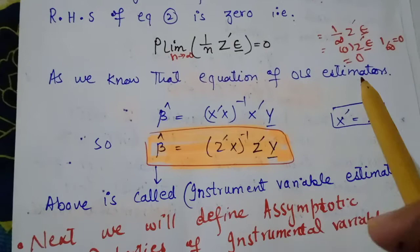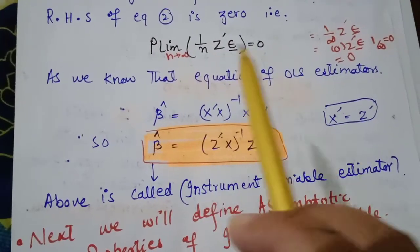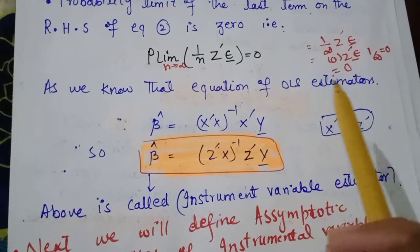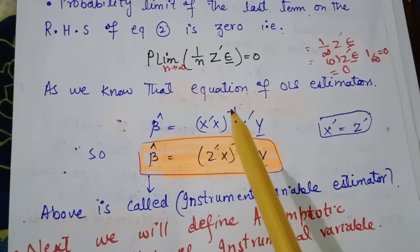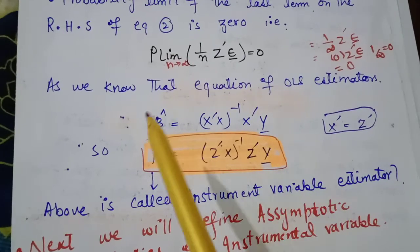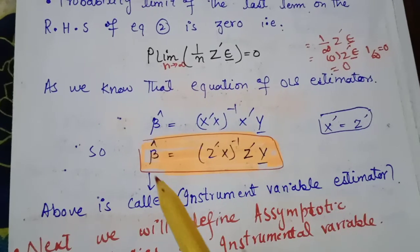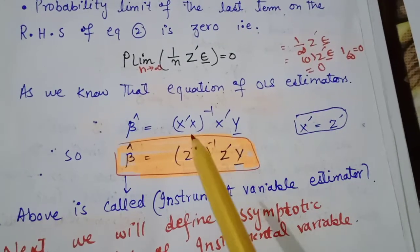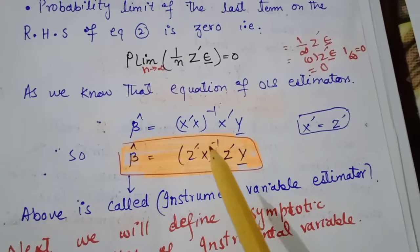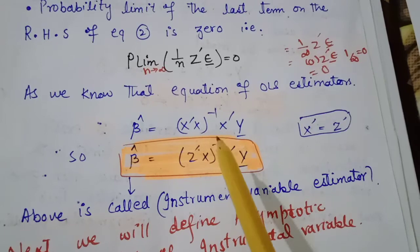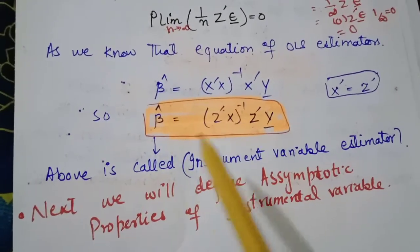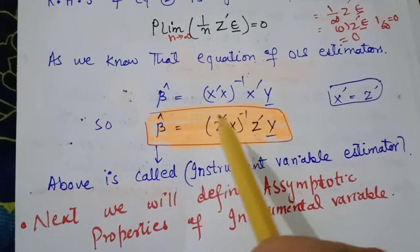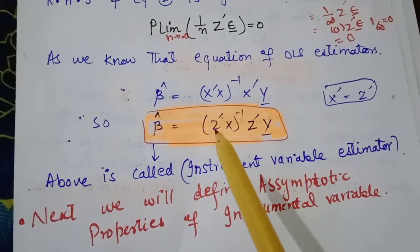Recall the OLS estimator equation: β̂ = (X'X)⁻¹X'Y. To introduce the instrumental variable, we replace X' with Z', giving the instrumental variable estimator: β̂_IV = (Z'X)⁻¹Z'Y. This equation is called the instrumental variable estimator.